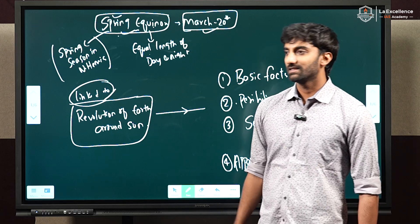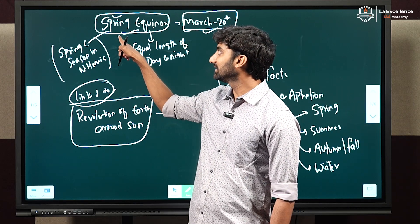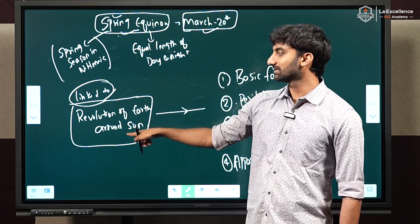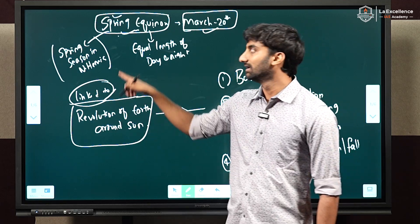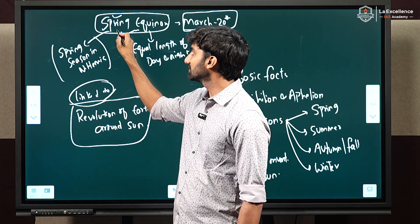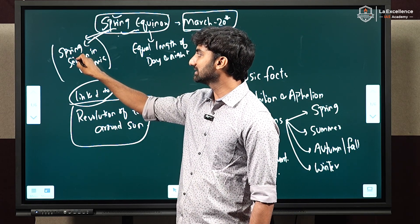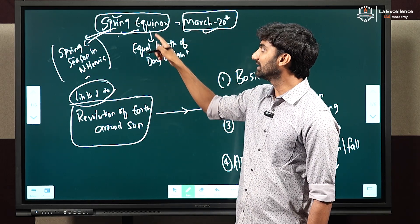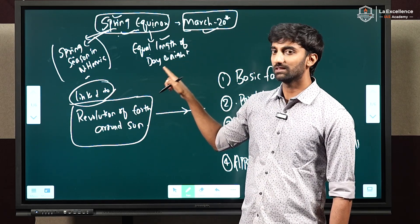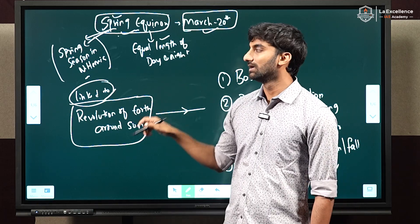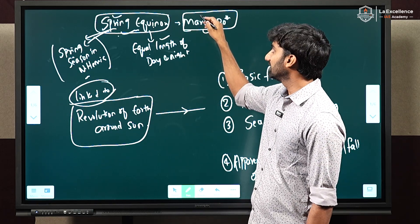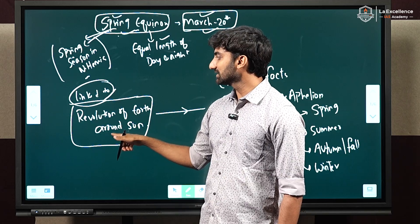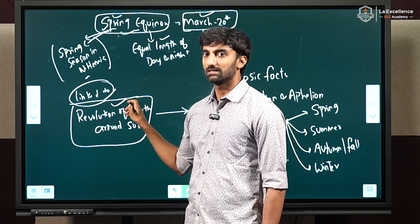Hello, welcome to Law Excellence. Recently we are seeing this term in news called spring equinox, and this term is related to a concept called revolution of earth around sun. This term spring equinox denotes spring — a particular season starting in the northern hemisphere called spring season — and equinox is associated with equal length of day and night all across the globe. March 20th, 2025 is considered as spring equinox day.